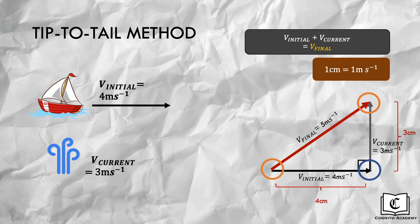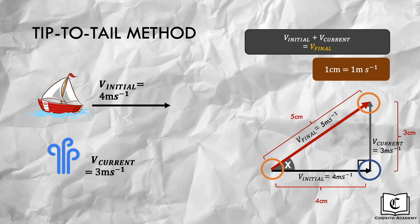Our job is not done yet — we need to get the magnitude and direction of the final velocity. We measure the length of this final velocity vector, giving us 5 cm, and referring back to our scale, the final velocity is 5 meters per second. Alternatively, we can calculate: using Pythagoras' theorem for the magnitude also gives us 5 cm, hence 5 meters per second.